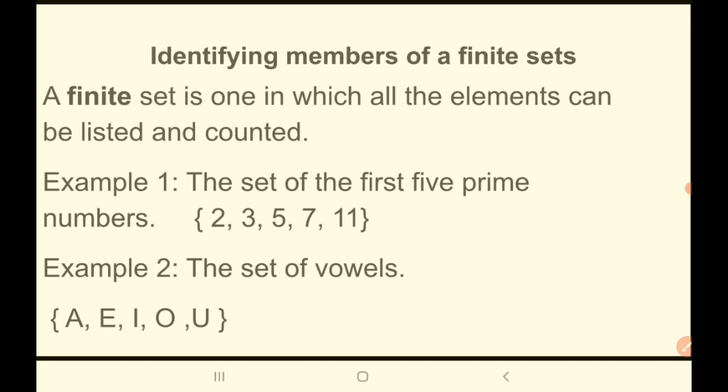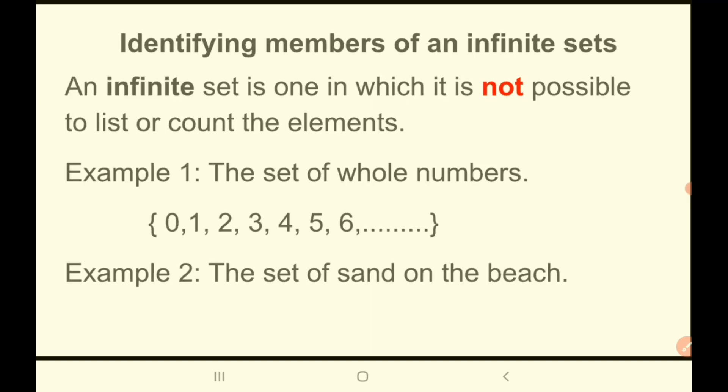For a finite set, you can count all the elements and you know all the members. So what do you think is an infinite set? An infinite set is one in which it is not possible to list or count all the elements. For a finite set we are able to count the elements, but for the infinite set we are not able to count or list all the elements. An example of an infinite set would be the set of all numbers — starting at 0, then 1, 2, 3, 4, 5, 6, and continuing forever, never reaching the last number.